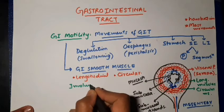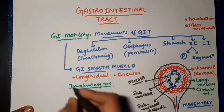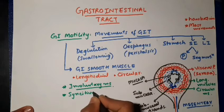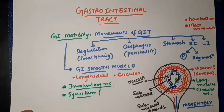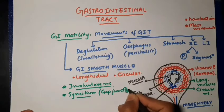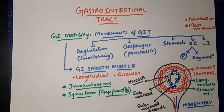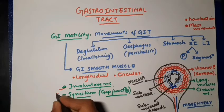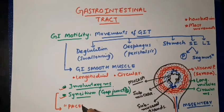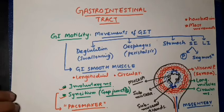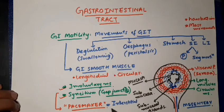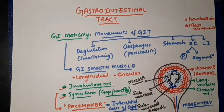These smooth muscles are involuntary muscles and they also act like a syncytium — whenever there is contraction, the whole muscle of the alimentary canal contracts. This is because of the presence of gap junctions, through which electric potential passes from one cell to another easily. A similar situation is seen in the heart, where involuntary cardiac muscles act like a syncytium. Such muscles require a pacemaker for the generation of action potential.